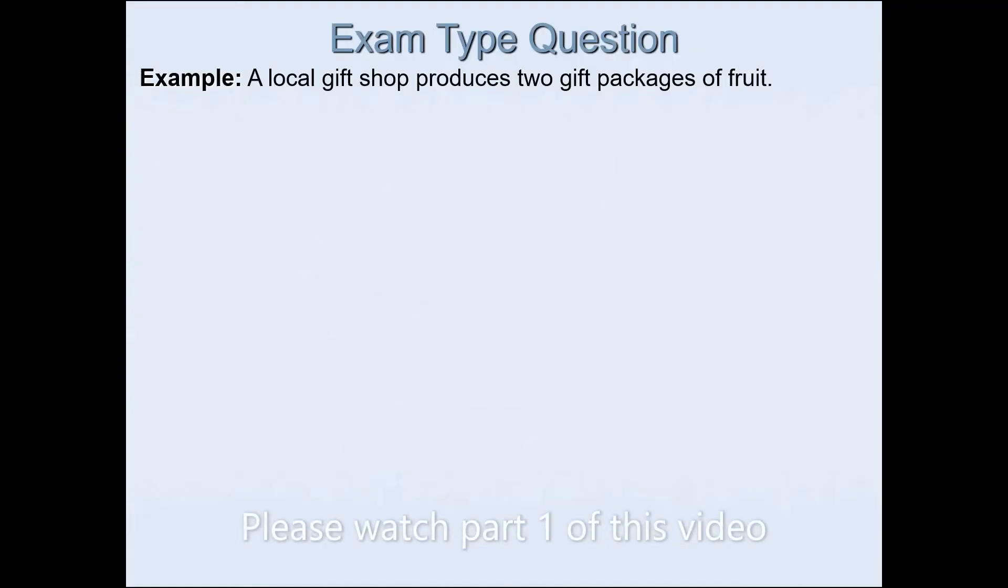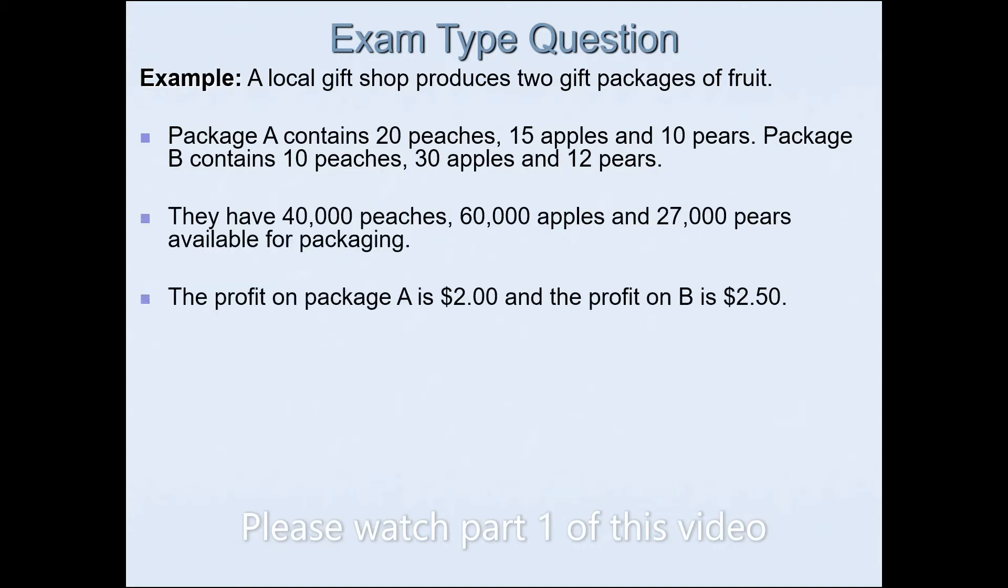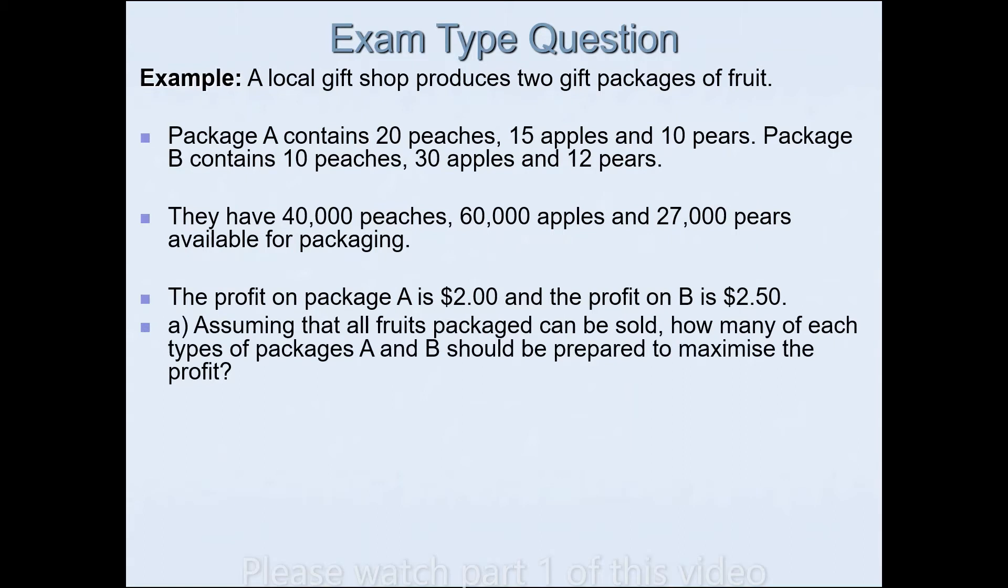The local gift shop produces two gift packages of fruit. Package A contains 20 peaches, 15 apples, and 10 pears. Package B contains 10 peaches, 30 apples, and 12 pears. They have 40,000 peaches, 60,000 apples, and 27,000 pears available for packaging. The profit on package A is $2, and profit on package B is $2.50. Assuming that all fruits packaged can be sold, how many of each type of packages A and B should be prepared to maximize the profit? We have already done part A in the previous video. Please do check that one out.